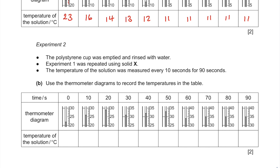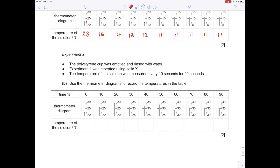Experiment two: the polystyrene cup was emptied and rinsed with water. Experiment one was repeated using solid X, with temperature measured every 10 seconds for 90 seconds. Make sure you're reading the thermometers accurately: 22, 26, 29, 31, 32, 33, 34, and then levelling out at 35 degrees Celsius.